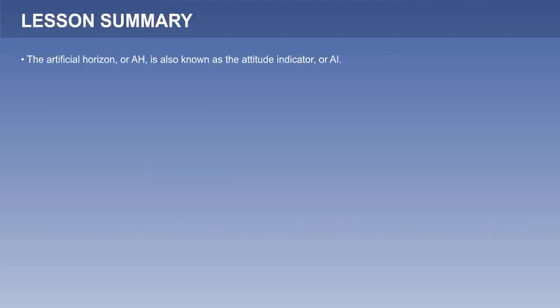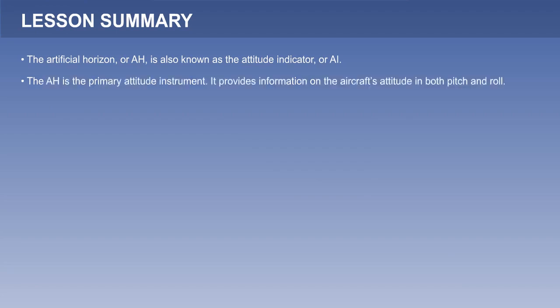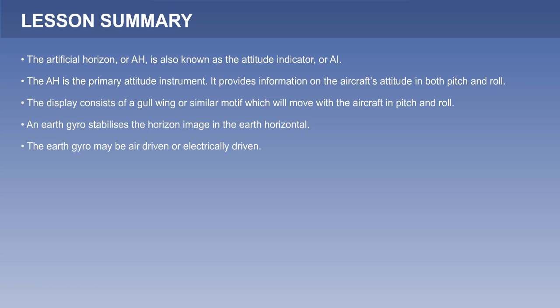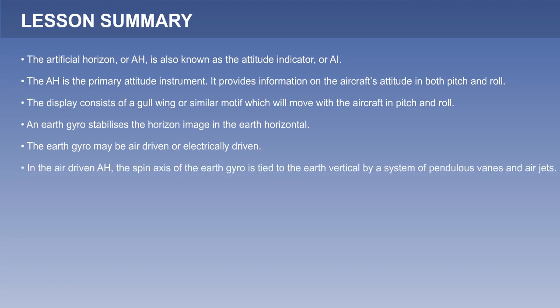The artificial horizon or AH is also known as the attitude indicator or AI, and is the primary attitude instrument, providing information on the aircraft's attitude in both pitch and roll. The display consists of a gullwing motif which moves with the aircraft in pitch and roll. An earth gyro stabilises the horizon image in the earth horizontal. The earth gyro may be air-driven or electrically driven. In the air-driven version, the spin axis is tied to the earth vertical by pendulous vanes and air jets.